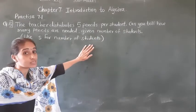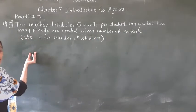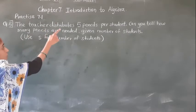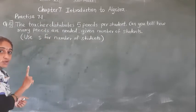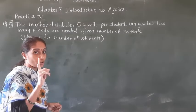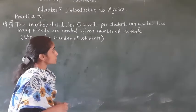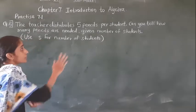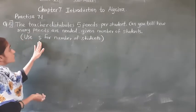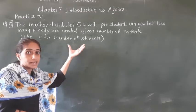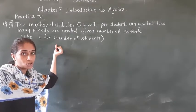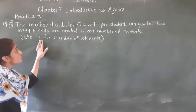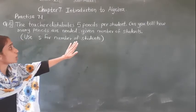Now use S for number of students. What is the given number of students? Use S for number of students. The teacher distributes 5 pencils per student; for one student, 5 pencils. Here it is given as a variable — S is the letter given for the students. So use S for number of students.